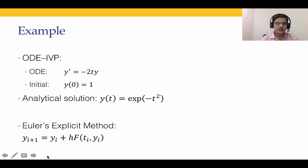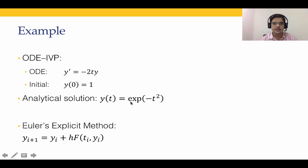The example we will solve is dy/dt = −2ty with initial condition y(0) = 1. Solving this analytically gives y(t) = exp(−t²). We want to apply Euler's explicit method and compare its numerical solution to this known analytical solution. Let's go to MATLAB to solve this.